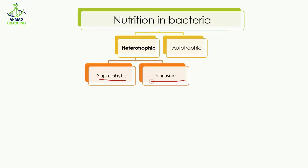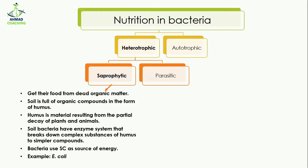Saprophytic bacteria get their food from dead organic matter — for example, dead organisms or dead plant material. They feed on these to obtain organic material and form their own organic compounds. The soil is full of organic compounds in the form of humus.